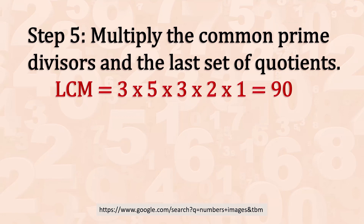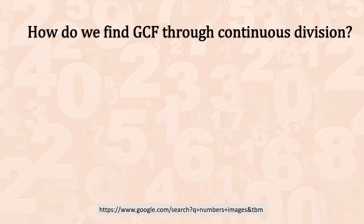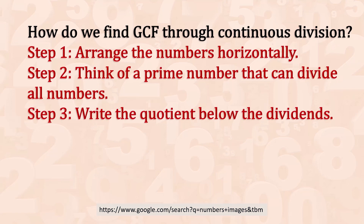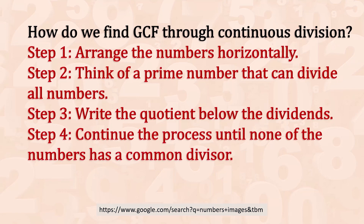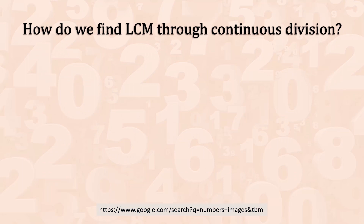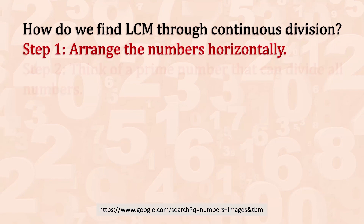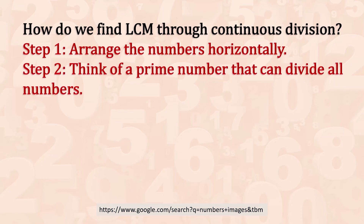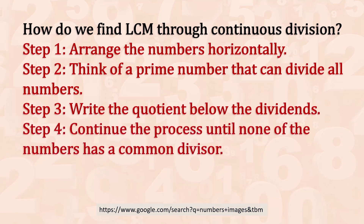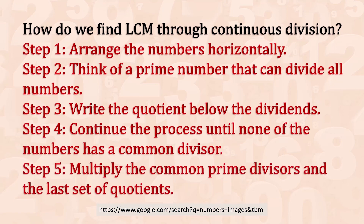And that's our last example for this lesson. Let's sum up. To find the GCF through continuous division: Step 1, arrange the numbers horizontally. Step 2, think of a prime number that can divide both numbers. Step 3, write the quotient below the dividends. Step 4, continue the process until none of the numbers have a common divisor. Step 5, multiply the common prime divisors. To find the LCM: Steps 1 through 4 are the same, but Step 5 is to multiply the common prime divisors AND the last set of quotients.